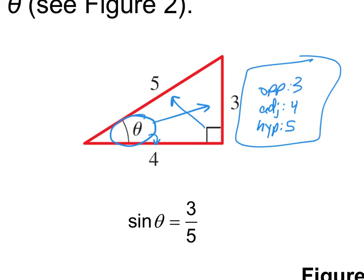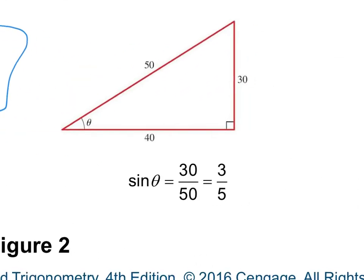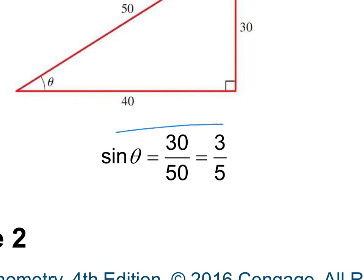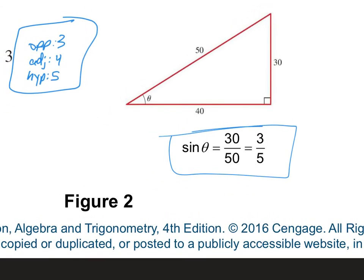So now when you go through all your trig functions, it's easy — just 3 over 4, 4 over 5, 5 over 3, whatever it is. Notice how they went from 30 over 50 to 3 over 5 — we simplify. Divide by 10. You always have to simplify, so make sure you guys are doing that.